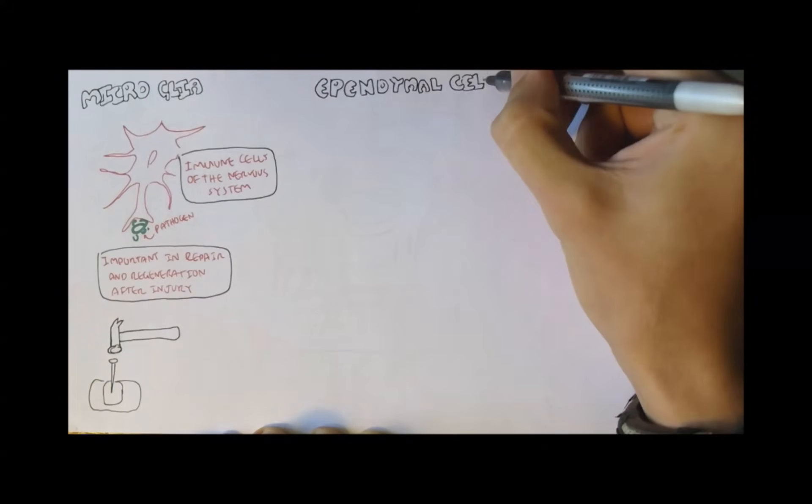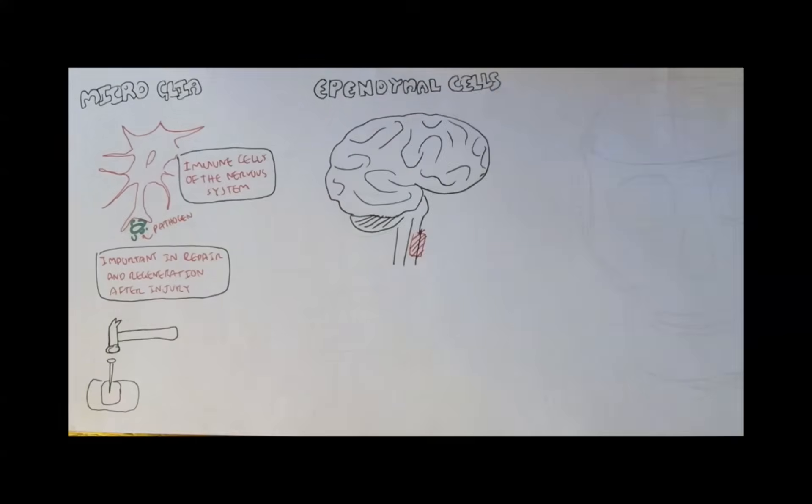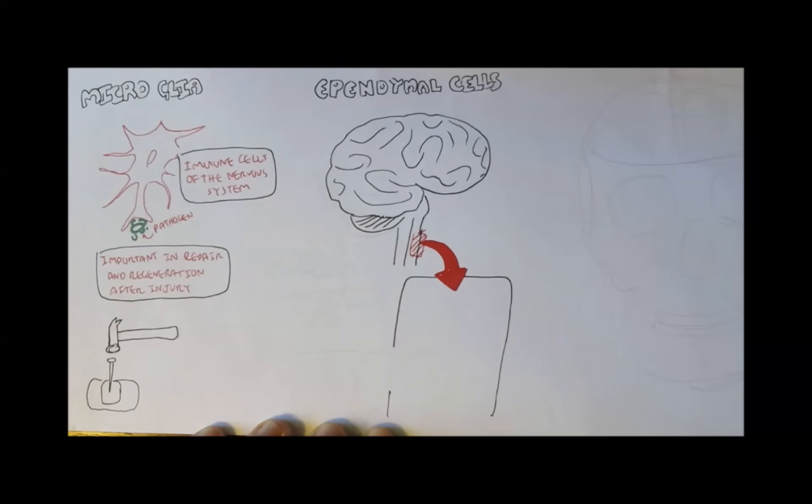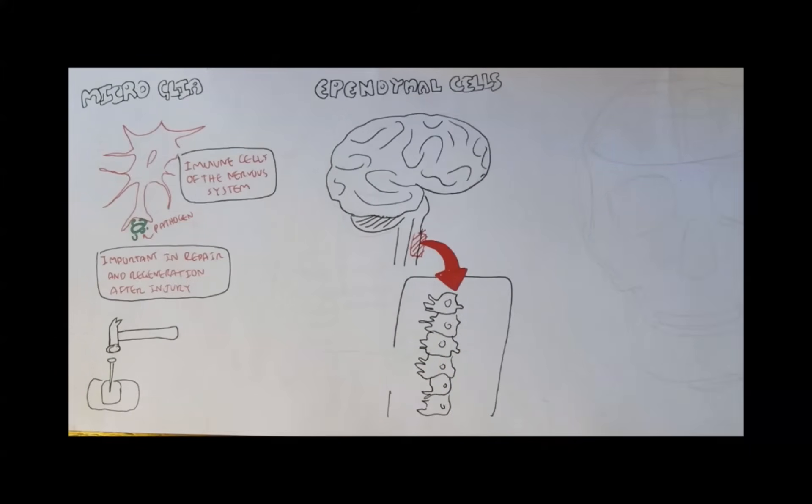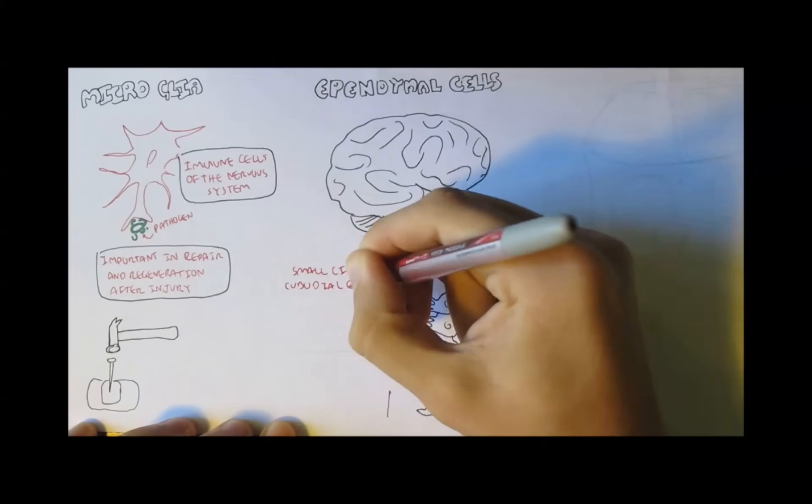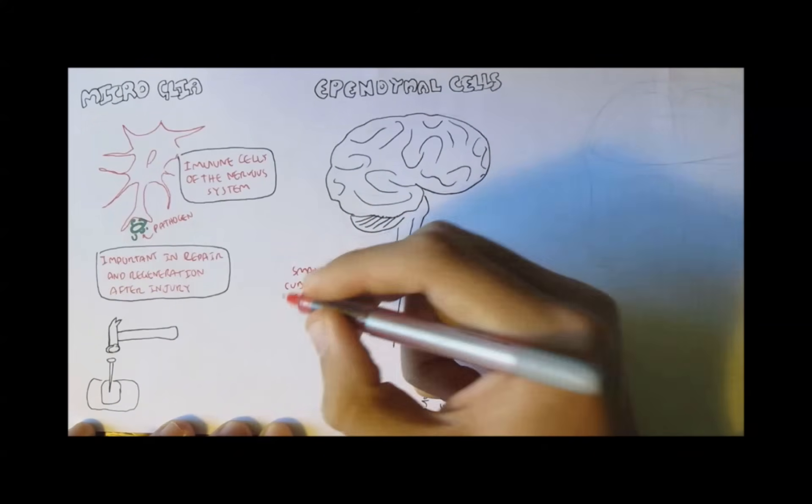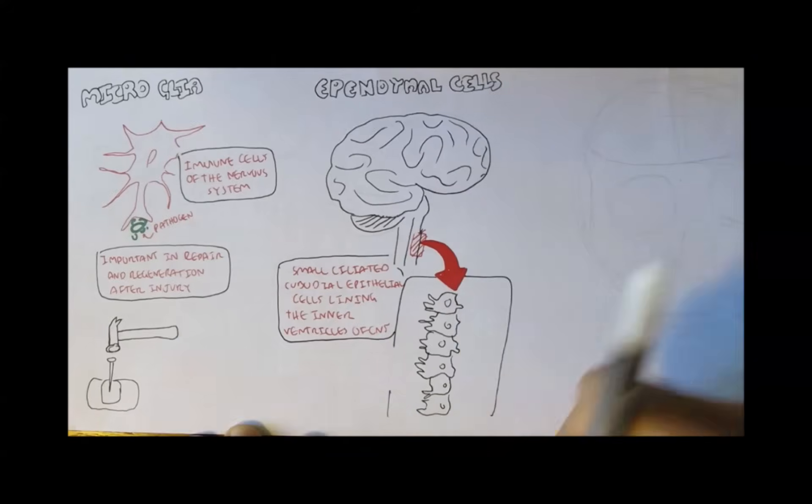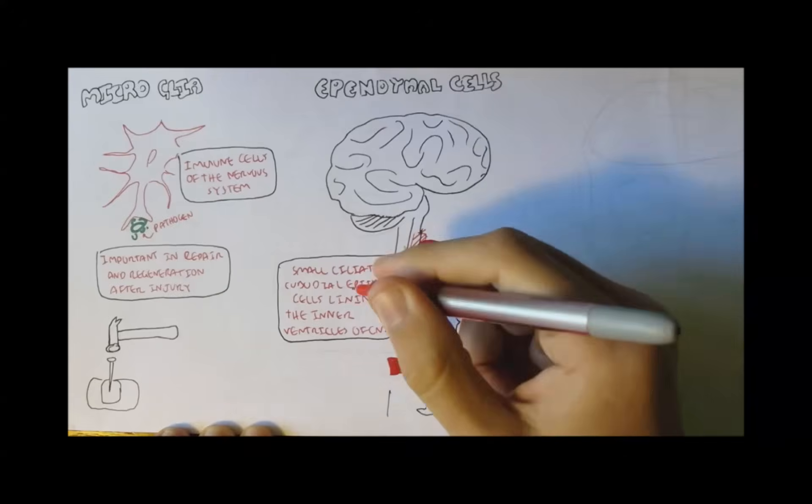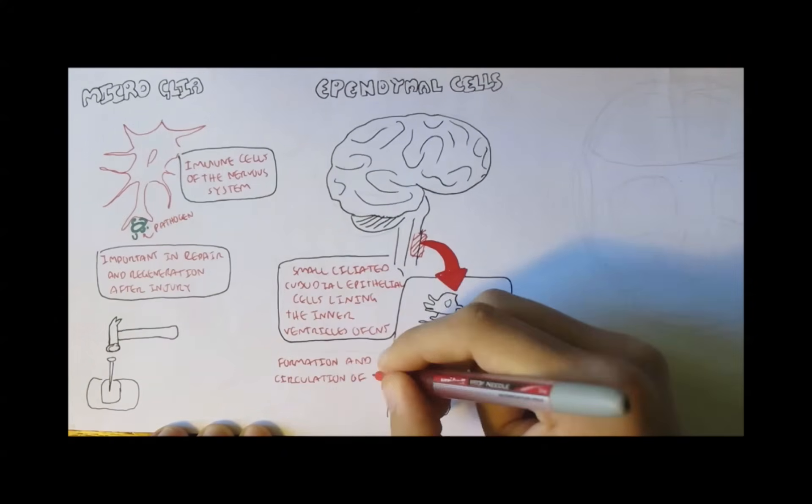Lastly, we have the ependymal cells, which are located in different areas in the brain. They are cells that look something like this. They are small, ciliated, cuboidal epithelial cells, which line the inner ventricles of the central nervous system. A very important function of the ependymal cells is the production of cerebrospinal fluid, or CSF.